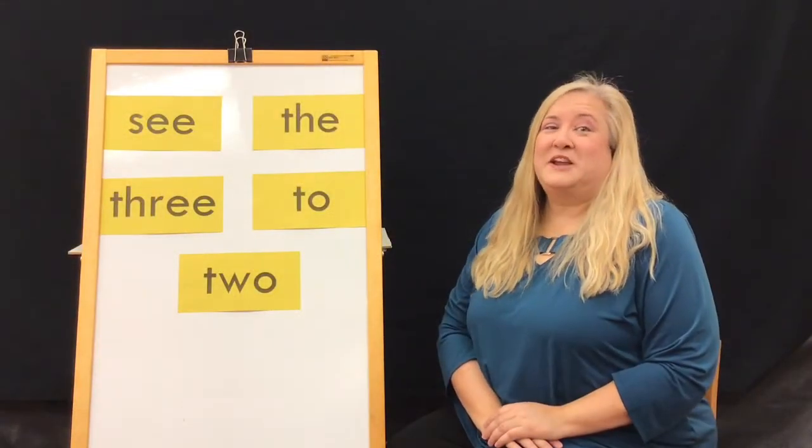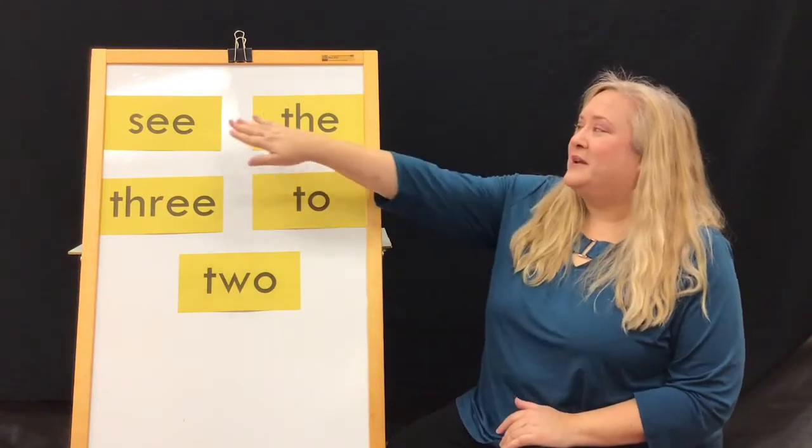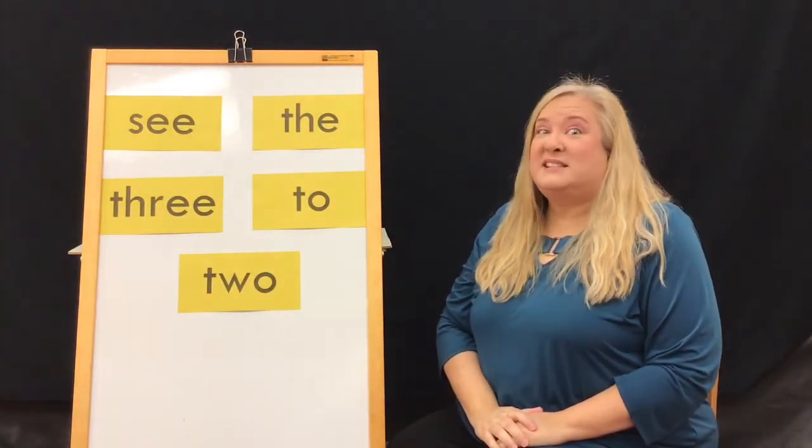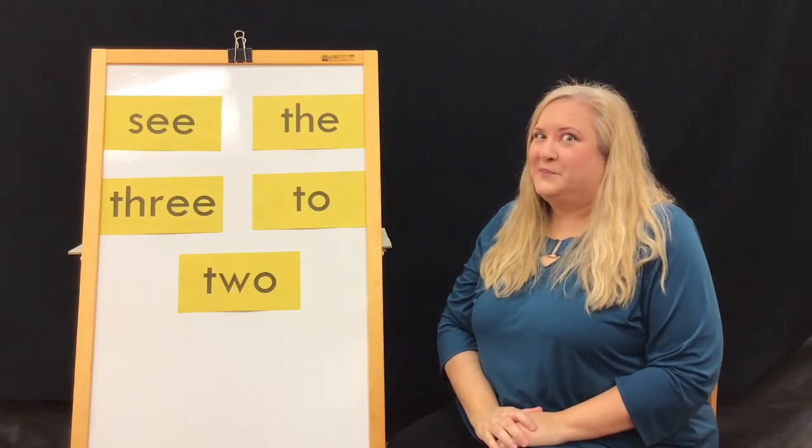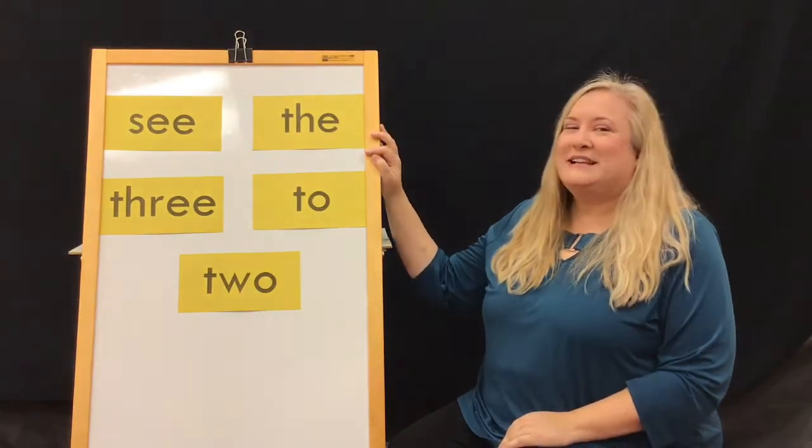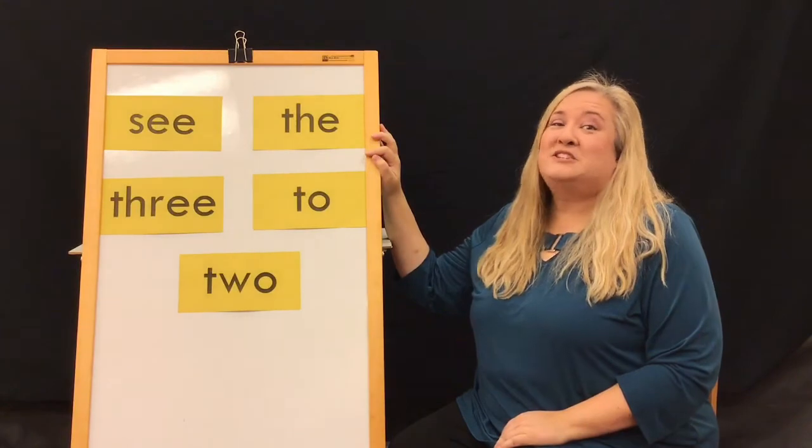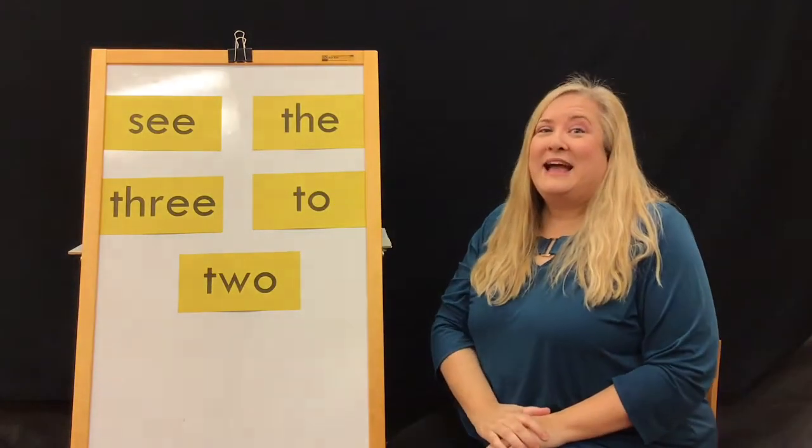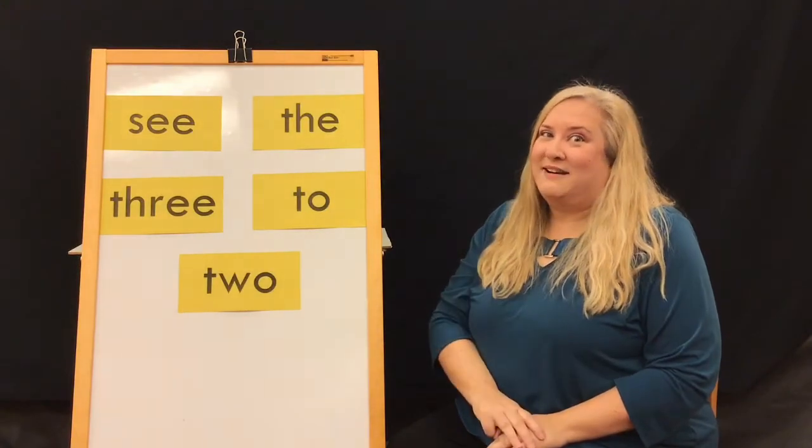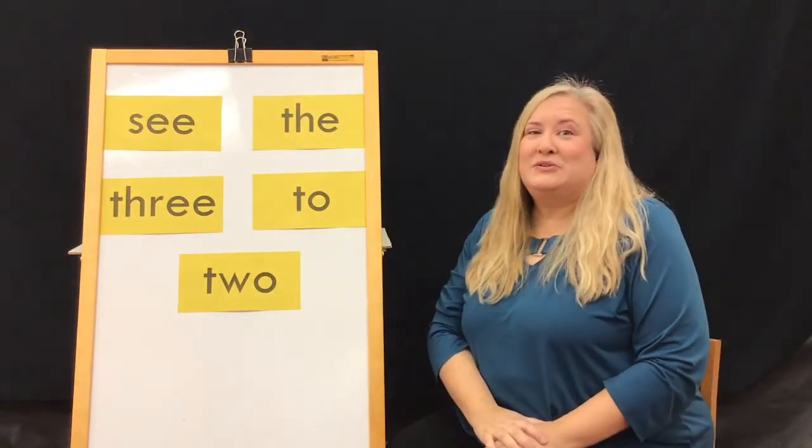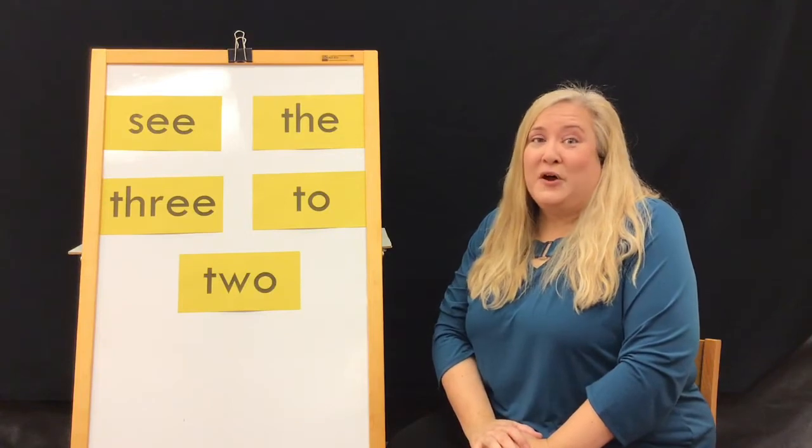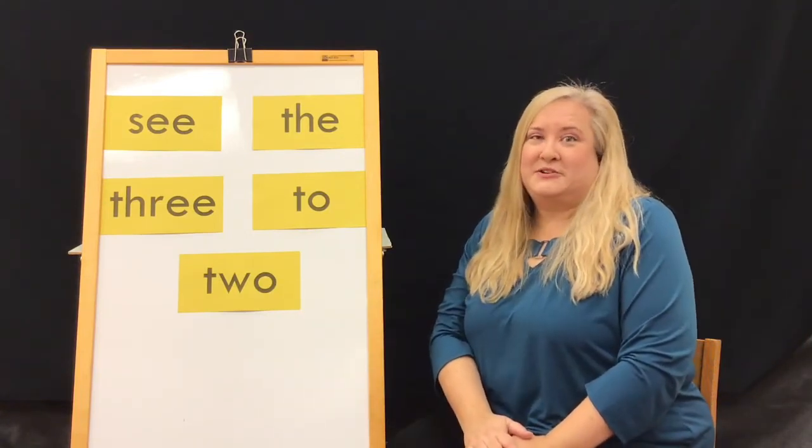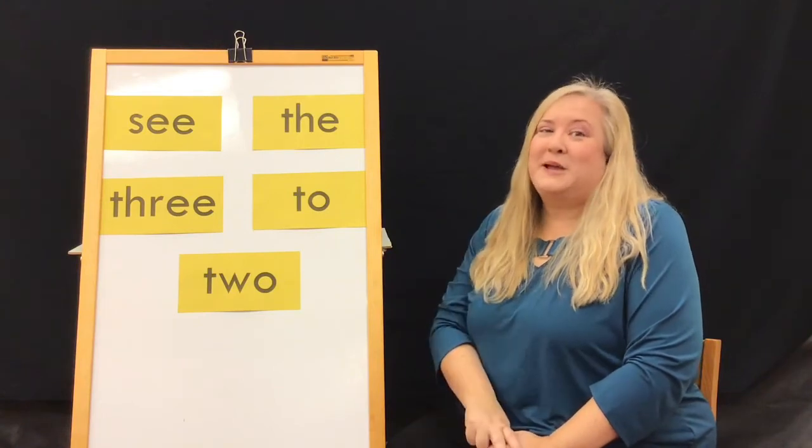Let's talk using our sight words. The first one, the word see, let's use it in a sentence. I see two bugs on the floor. The second word is the. I am going to the store. The third word is three. I have three dogs. The fourth word is two. I love to go to the farm. And the fifth word is two, which is the number two. I have two big brothers.